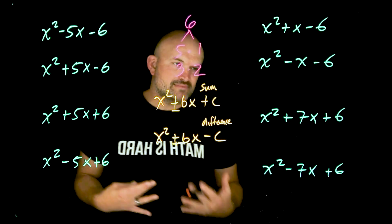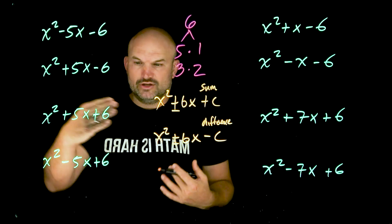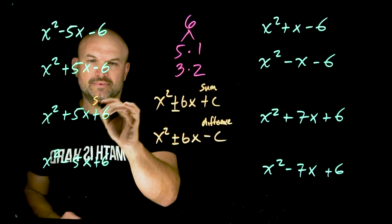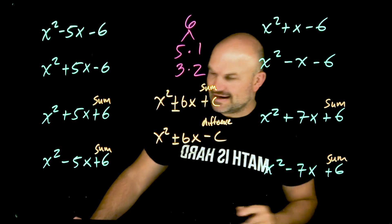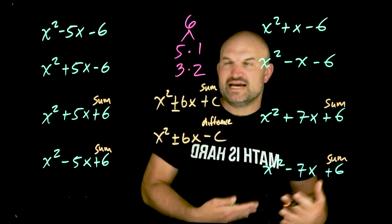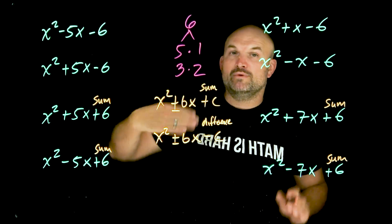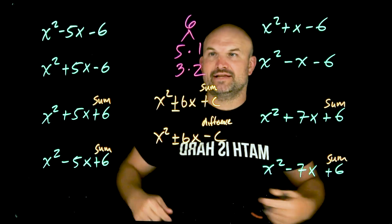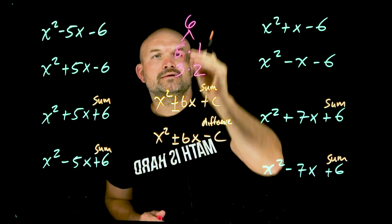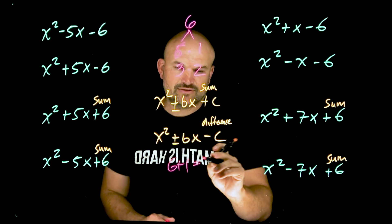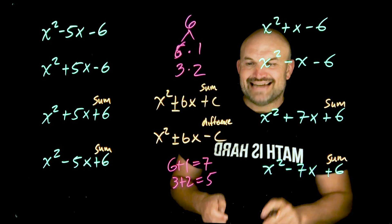A quick tip I had my students use when first learning factoring: look at the last number. If it's positive, write the word 'sum.' What sum tells us is that when we're looking at the factors of the constant C, we are going to find the sum — we want to add them together. So six plus one equals seven, and three plus two equals five.